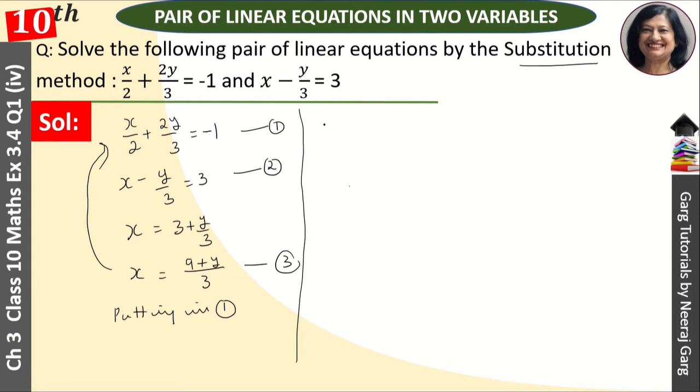Putting in equation 1, we get 1/2 × (9 + y)/3 + 2y/3 = -1.